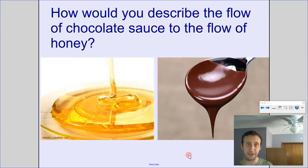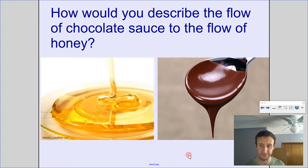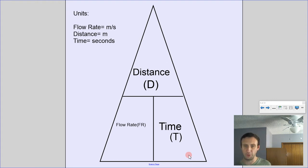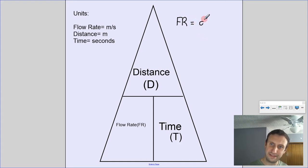Before we get into measuring flow rate, consider: which has a higher flow rate — chocolate sauce or honey? I would say chocolate sauce has a higher flow rate, making it less viscous than honey, so it would flow faster. Here is the formula for flow rate: we use the notation FR, and it equals the distance the fluid traveled divided by the time it took. Time is in seconds, distance in centimeters, giving us units of centimeters per second.